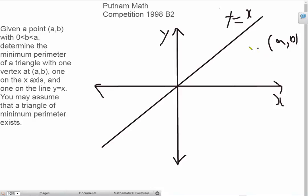So let's reflect the point (a,b) across the line y=x. So you get the point (b,a).